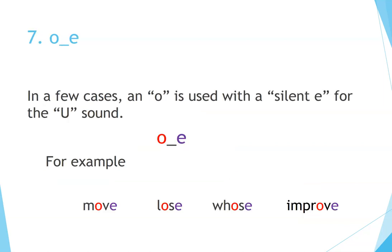Number 7: OO silent E. In a few cases, an OO is used with a silent E for the OO sound. For example: move, lose, improve.